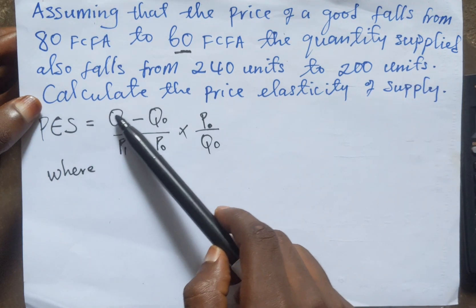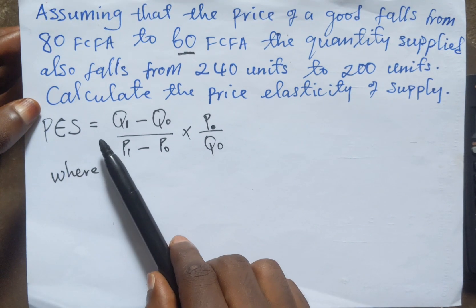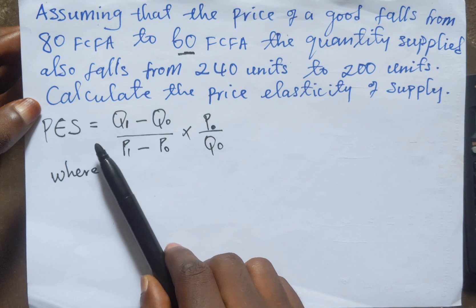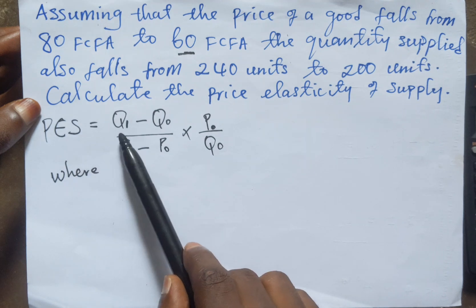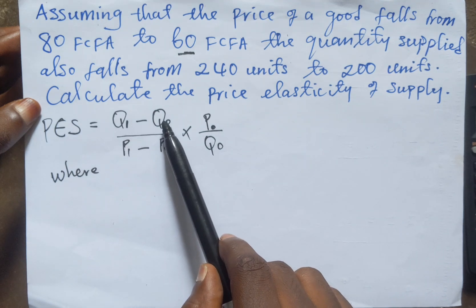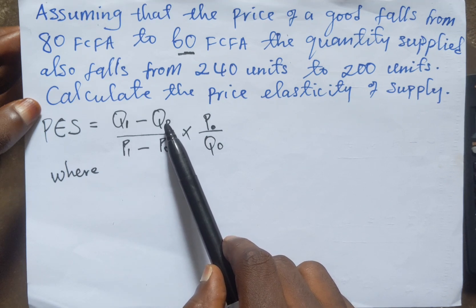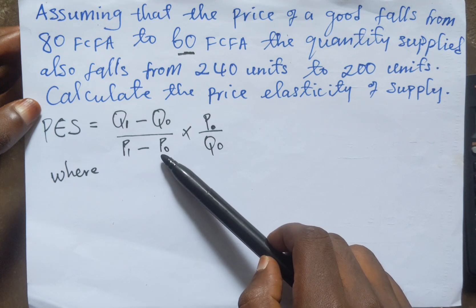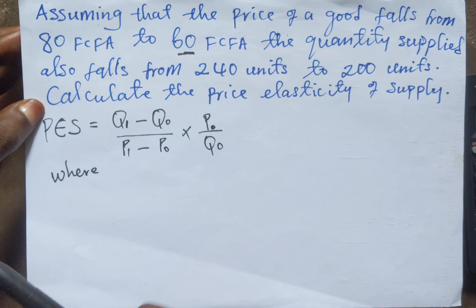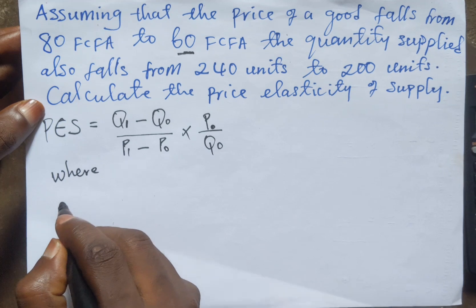The question asks us to calculate the price elasticity of supply. We have decided to use the standard formula to calculate PES, which is denoted as PES equal to Q1 minus Q0, where Q1 is the final quantity and Q0 is the initial quantity. P1 is your final price and P0 is the initial price.